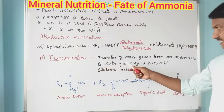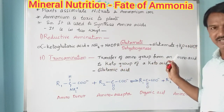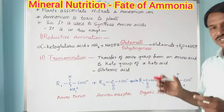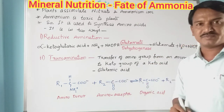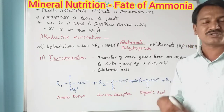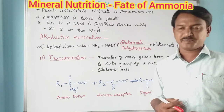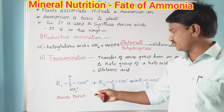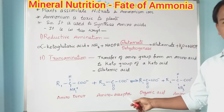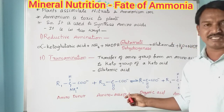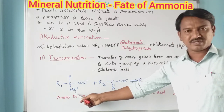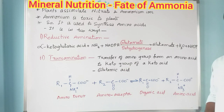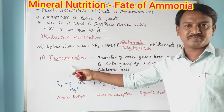The transfer of amino group is from an amino acid to the keto group of a keto acid. The main source of the amino group is glutamic acid. See the example: this is the amino donor — mostly that is glutamic acid — and this is the amino group acceptor, which is the keto acid.